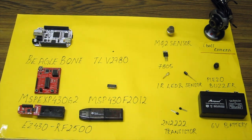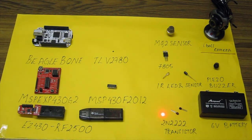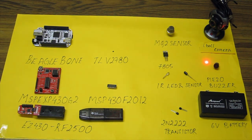Those were the TI ICs. Now the non-TI components are: this is the MQ2 sensor, which is a semiconductor smoke sensor with a sensitive material whose conductivity varies with gas concentration. This is IC 7805, which is a 3-terminal 5-volt positive regulator. This is a pair of IR LEDs and sensors used for smoke detection. These are a few 2N2222 transistors, which are NPN silicon planar switching transistors. This is a 12 megapixel high definition web camera for smoke analysis using image processing. This is a piezo buzzer for signaling the presence of smoke, and a 6-volt DC battery for backup power.